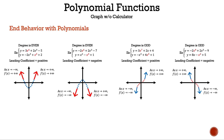Now let's look at the end behavior so we can graph without a calculator. If the degree is even, then it looks like a quadratic function, or a U. We can form that U with our hands. If both hands are up, then the leading coefficient is positive. If both hands are down, then the leading coefficient is negative.